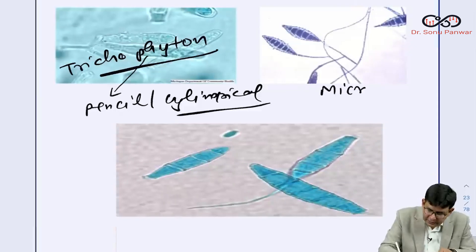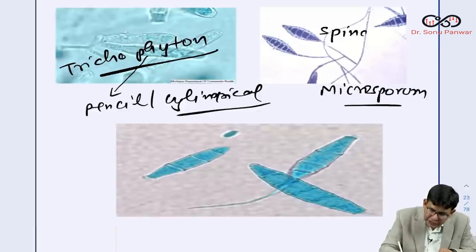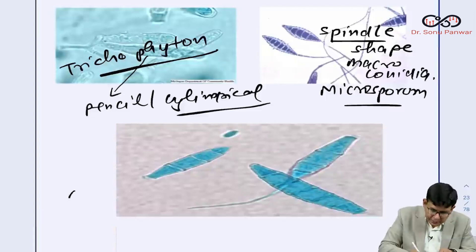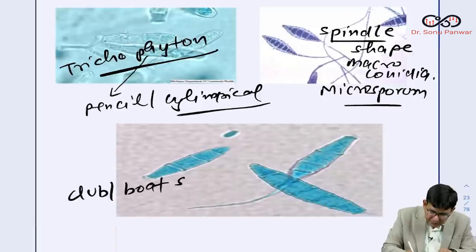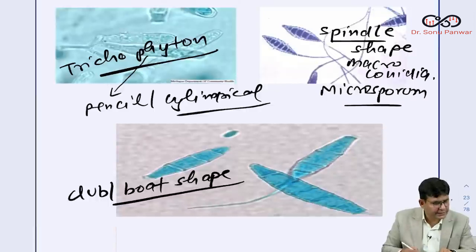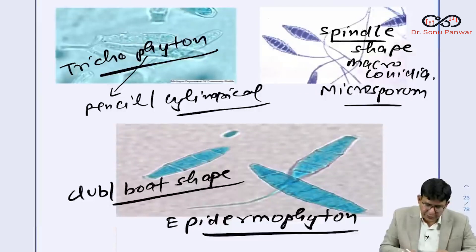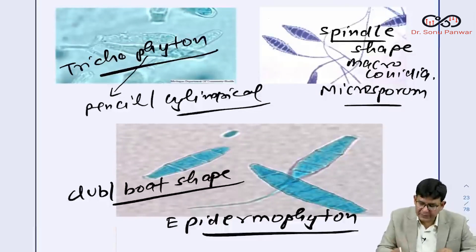Microsporum has a spindle-shaped macroconidia. Epidermophyton has a club or boat shape macroconidia. So to summarize: club or boat shape is Epidermophyton, spindle shape is Microsporum, and Trichophyton is pencil or cylindrical in shape.